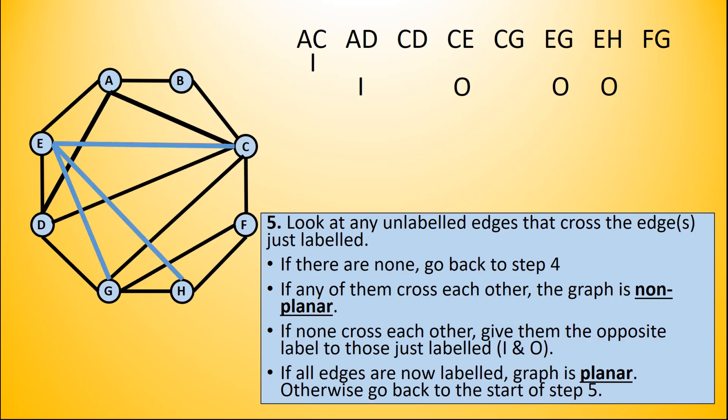Then we consider any lines that cross the ones that we have most recently labeled - those three that were O's. We look at those and the lines that cross those are CD, CG, and FG. We can quickly see that they are not crossing each other, and we give those I, being opposite to the O that was given for CE, EG, and EH. And actually we find that it's planar because now we have the point where all edges are labeled.